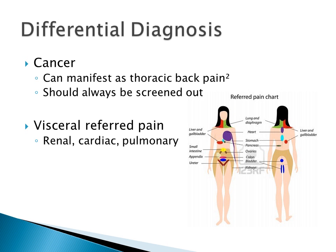For differential diagnosis, you want to make sure that you screen for cancer, as it can manifest as thoracic back pain, as well as visceral referred pain from renal, cardiac, and pulmonary systems.